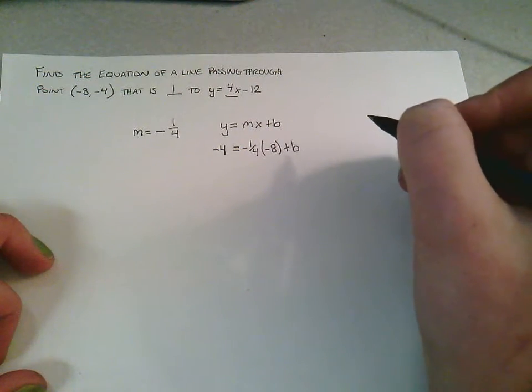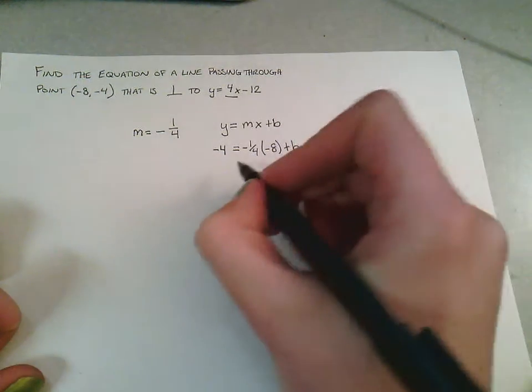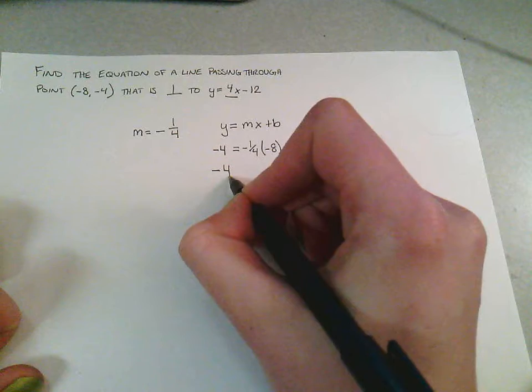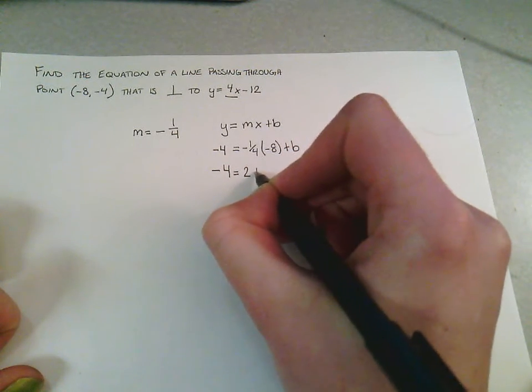The only thing left to do now is to solve for our y-intercept. So we'll carry this down. We have -4 = 2 + b.